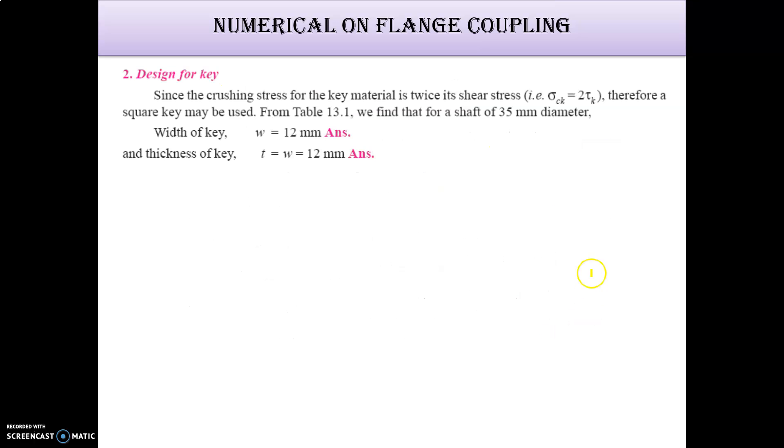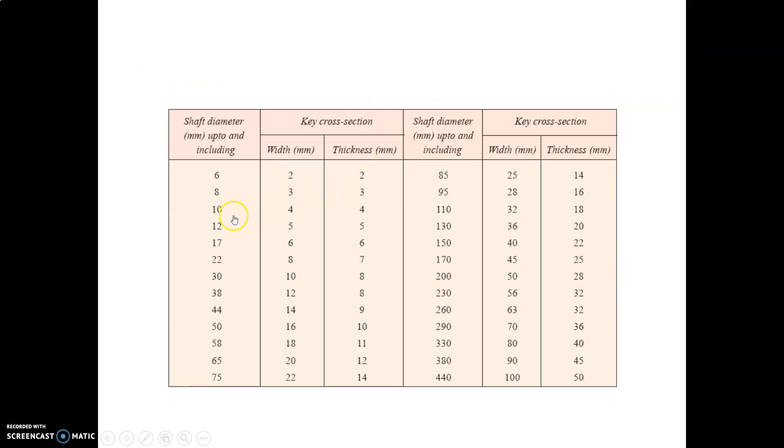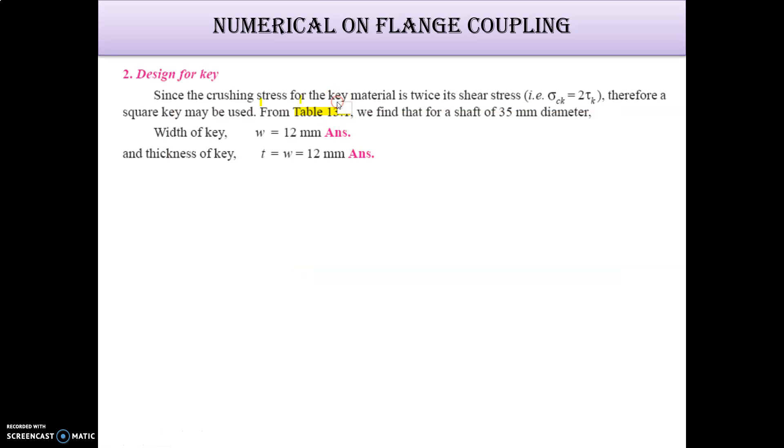Now design for key. We know that sigma CK equals 2 times tau K, which means it's a square key. Now from where we get this value 12 for W and T, from table number 13.1. 35mm was the diameter, so it's 38mm is here, so we should take this 12 and this 8mm. So W and T are equal, that's why 12 is equal to 12, that means W and T both are same here.